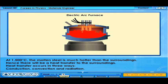At 1500 degrees Celsius, the molten steel is much hotter than the surroundings. Hence, there will be a heat transfer to the surroundings. Heat transfer occurs in three ways: conduction, convection, and radiation.